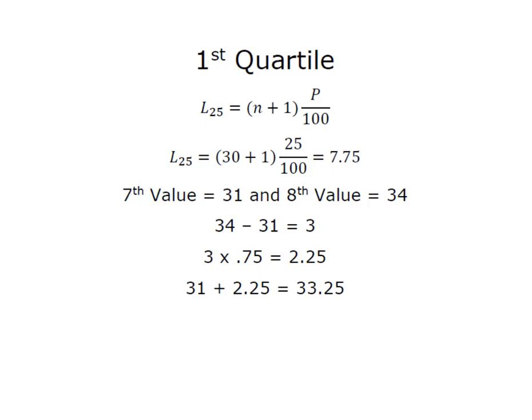So the process we're going to use is this idea of finding the location of the first quartile and the first quartile is the same thing as P25, so one quartile 25 equals 25 percentile, so we're going to take our number of observations which in our case is 30, we're going to add one and we're going to multiply it by the percentile we're looking for divided by 100.